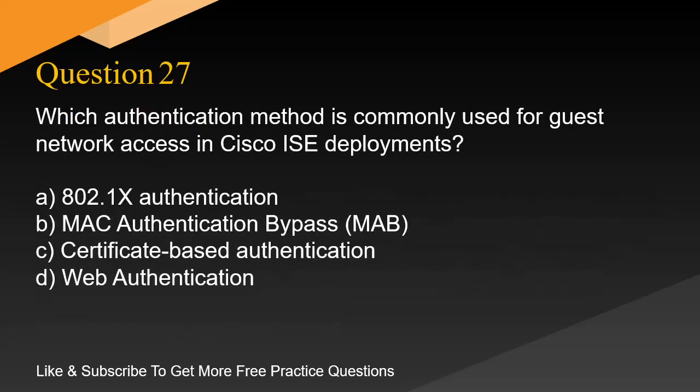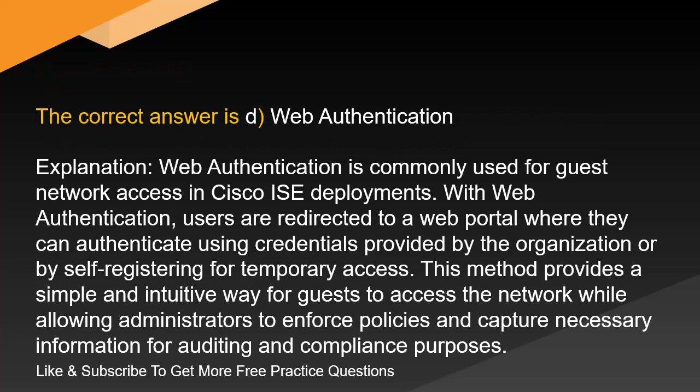Question 27. Which authentication method is commonly used for guest network access in Cisco ISE deployments? A. 802.1x authentication. B. MAC authentication bypass (MAB). C. Certificate-based authentication. D. Web authentication. The correct answer is D. Web authentication.